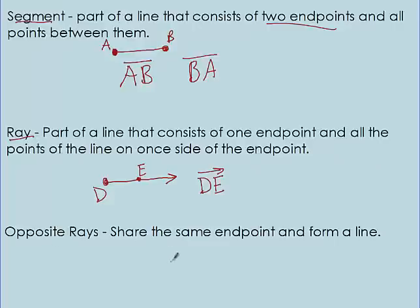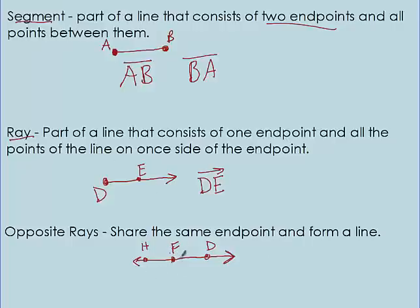Opposite rays share the same endpoint and form a line. I have a point F in the middle, a point D on the left, and a point H on the right — a line goes through all of these forever in both directions. We can split this into two different rays: one ray from F to D, and one ray from F to H. These are opposite rays since they go in opposite directions.